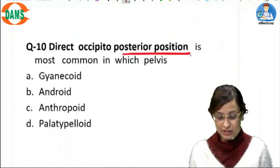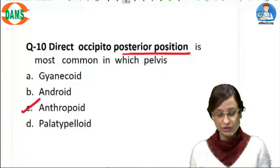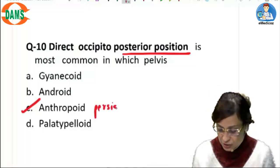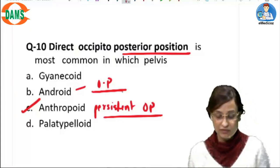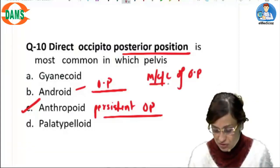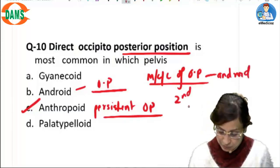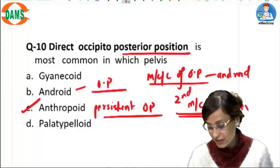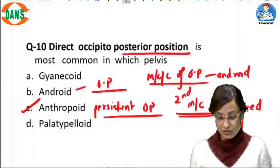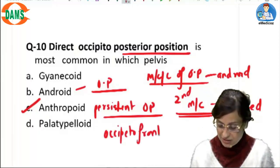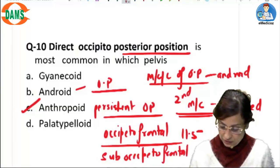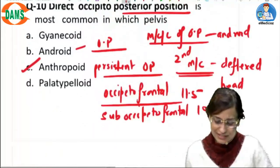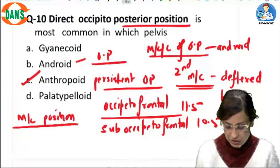Direct occipital posterior is most common in the anthropoid pelvis. Direct OP as well as persistent OP are seen in the anthropoid pelvis, whereas if only OP is asked, the answer is android pelvis. The most common cause of OP position is android pelvis; the second most common cause is a deflexed head. Because the head is deflexed, the engaging diameter in OP is occipitofrontal — 11.5 cm — or it could be suboccipitofrontal at 10.5 cm. The most common position in OP is right occipitoposterior (ROP).